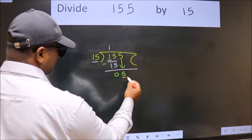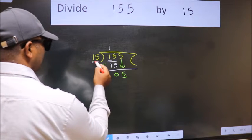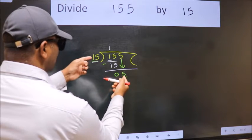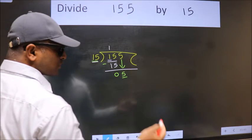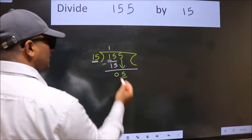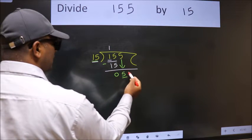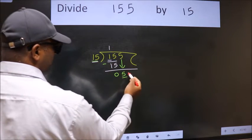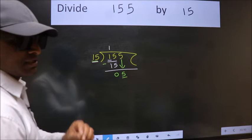Here we have 5. Here 15. 5 is smaller than 15. So what many do is they directly put dot, take 0. Which is wrong.